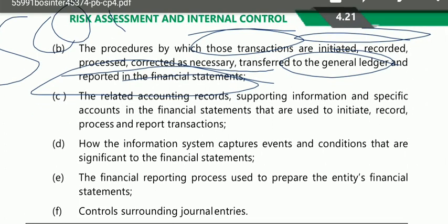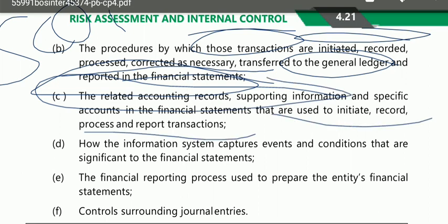We have to understand the significant classes of transactions and the procedure ensuring that transactions are properly recorded, controlled, and processed with correction. The related accounting standards, supporting information, and specific accounts in the financial statements used to initiate, record, process and report transactions must also be understood, along with how the information system captures events and conditions that are significant to financial statements.